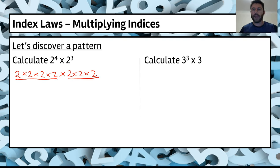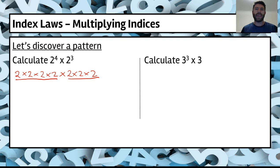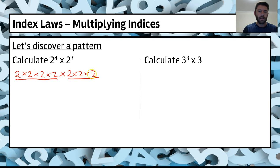Now that we've got an expanded form, how can we convert that back into index form? All we do is add the number of 2s in the multiplication chain: 1, 2, 3, 4, 5, 6, 7. So that actually equals 2 to the power of 7.